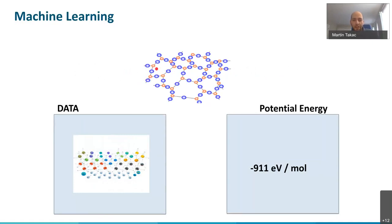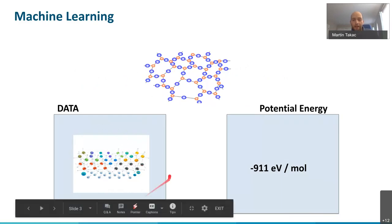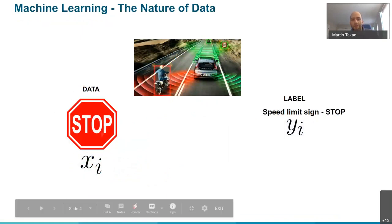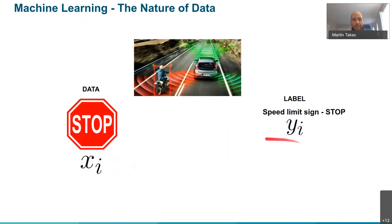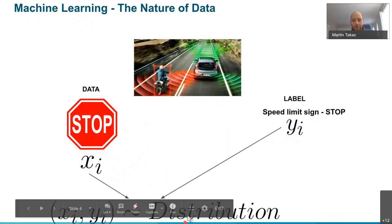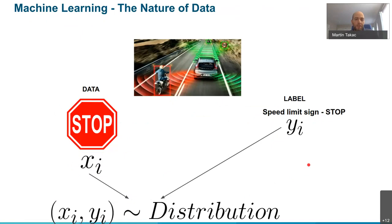Let's say this is a collaboration with some faculty from our university. We have atoms - maybe oxygen, hydrogen, carbon - and we know some coordinates x, y, and z. The task can be: given this input, I want to predict some properties like potential energy. Or maybe I can take pictures - for example a stop sign as input - and I want to classify what kind of object is on the picture. You can see that this data is coming from some distribution and we don't really know the distribution.